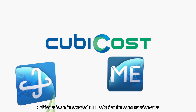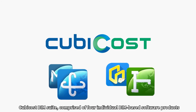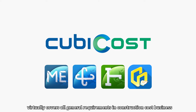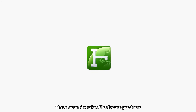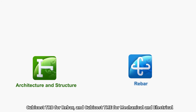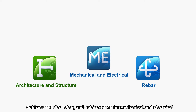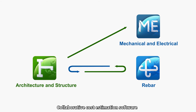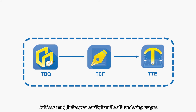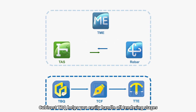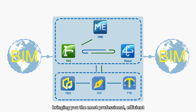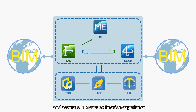Qubicost is an integrated BIM solution for construction cost. The Qubicost BIM Suite, comprised of four individual BIM-based software products, virtually covers all general requirements in construction cost business. Three quantity takeoff software products — including Qubicost TAS for architecture and structure, Qubicost TRB for rebar, and Qubicost TME for mechanical and electrical — help you deal with all kinds of calculations with BIM technology. Collaborative cost estimation software Qubicost TBQ helps you easily handle all tendering stages. BIM models and related data can be easily transferred among the four products, bringing the most professional, efficient, and accurate BIM cost estimation experience.